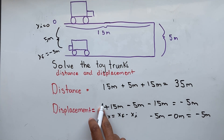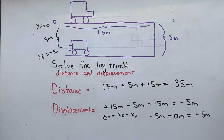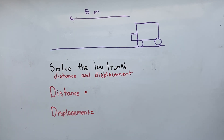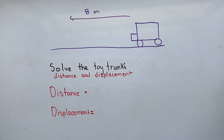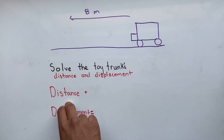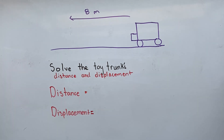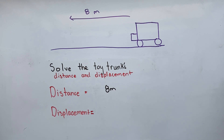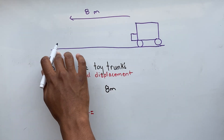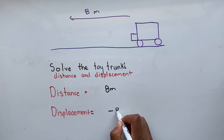Either method works — it's your preference which one you want to choose. Let's look at another example. Let's say our toy truck travels 8 meters to the left, and we are asked to solve for the toy truck's distance and displacement. When dealing with distance, we only take into consideration the magnitude, so the toy truck's distance traveled is 8 meters. When dealing with displacement, we do have to take into consideration the direction the object has traveled. Since our toy truck is traveling to the left, the toy truck's displacement is negative 8 meters.